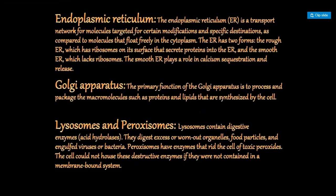The endoplasmic reticulum provides a pathway for the distribution of nuclear material from one cell to another. Certain enzymes present in smooth ER synthesize fats, steroids, and cholesterol. Rough ER is concerned with the transport of proteins synthesized by ribosomes — ribosomes are present on the rough ER surface for this purpose.